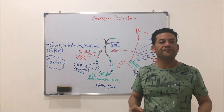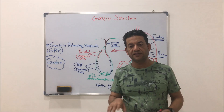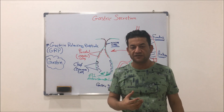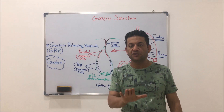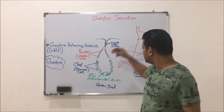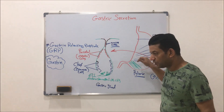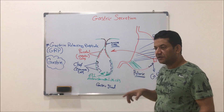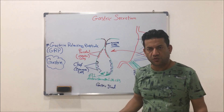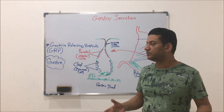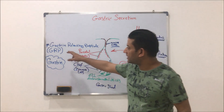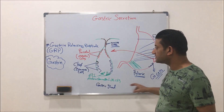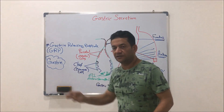During the second phase, the gastric phase, which starts when food enters the stomach, the nerve endings in the gastric wall are also stimulated to secrete GRP, which in turn stimulates the G cells to secrete gastrin.